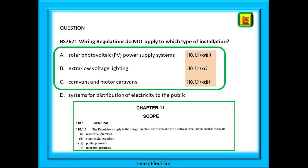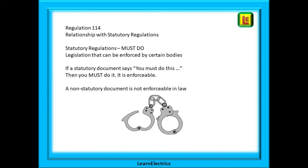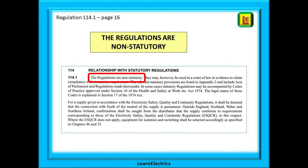Staying in chapter 11, look at regulation 114 on page 16 — relationship with statutory regulations. Statutory regulations are a 'must do'; they are part of legislation that can be enforced in law. If a statutory document says you must do this, then you must do it — it is enforceable. On the other hand, a non-statutory document is not enforceable in law. The first line of regulation 114.1 tells us the wiring regulations are non-statutory, and this often comes up as an exam question.